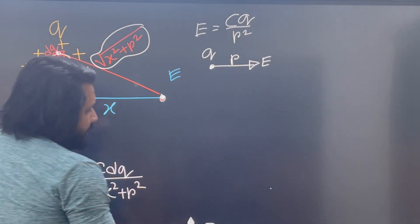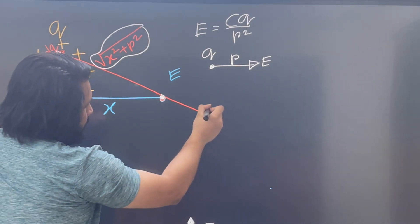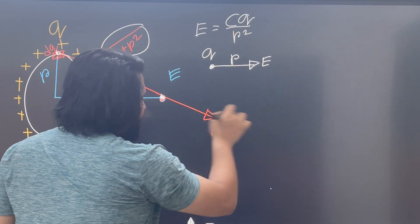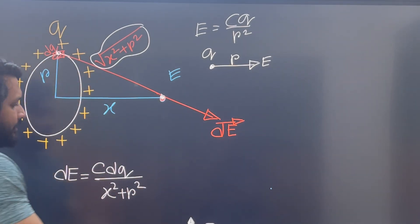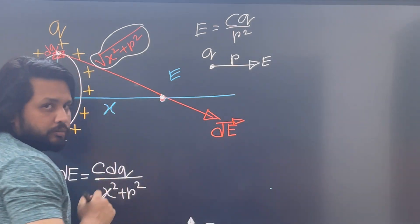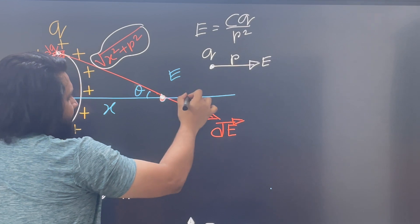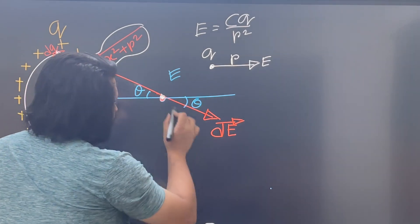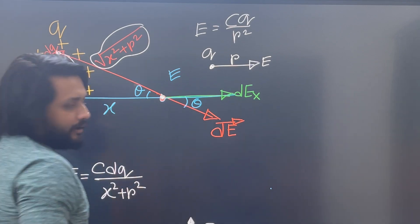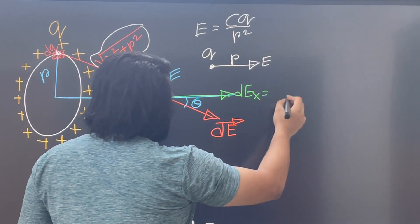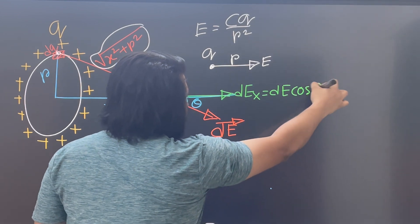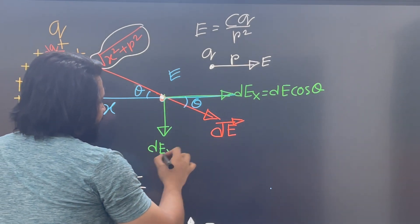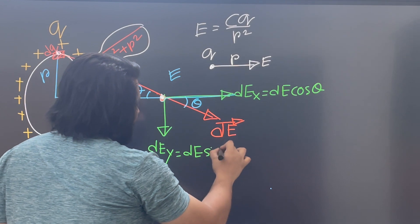Now, how do we handle this? The electric field dE has two components. One component is dE·cosθ along the x-axis, and the other is dE·sinθ perpendicular to x. The y-components cancel by symmetry, so dE·sinθ cancels out.